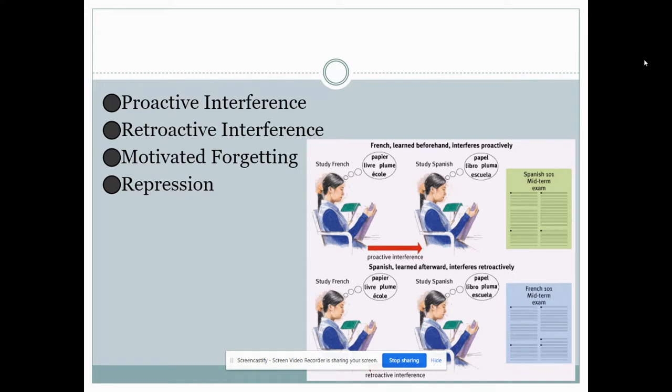Retroactive interference is when we forget the old information because we mix it up with something newer. So if for example you've gotten a new phone number and you've told everybody that new phone number and then all of a sudden someone says what was your old phone number again and you can't remember because all you can think about is your new phone number. That's what we would call retroactive interference.